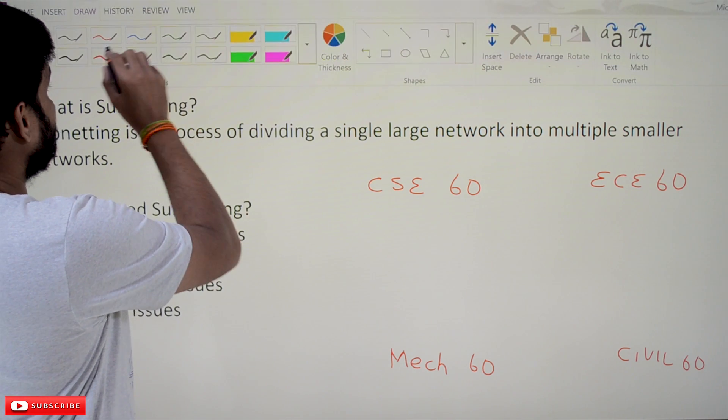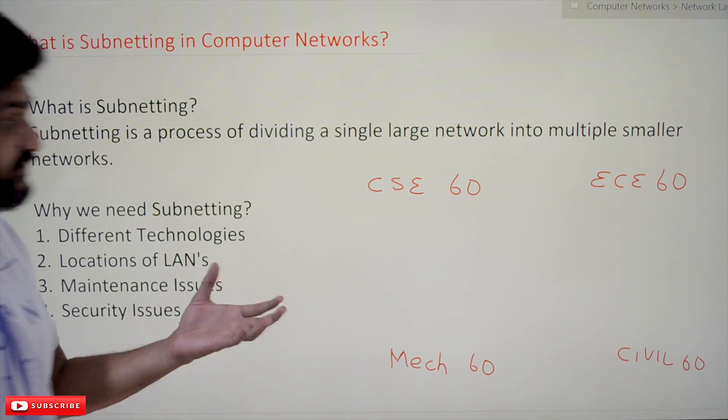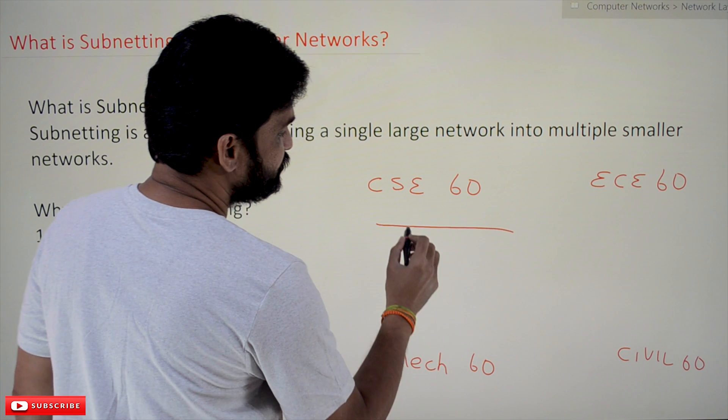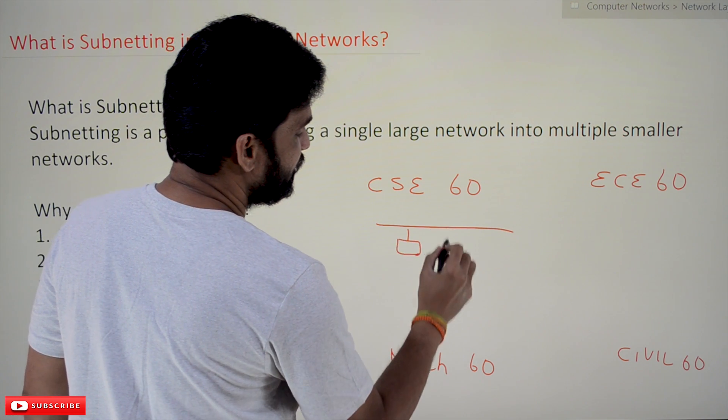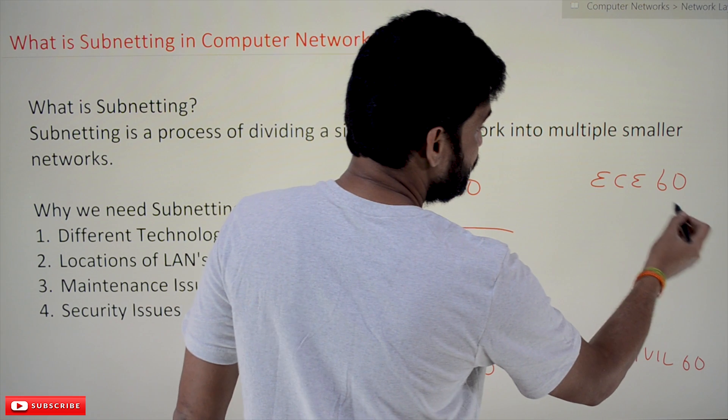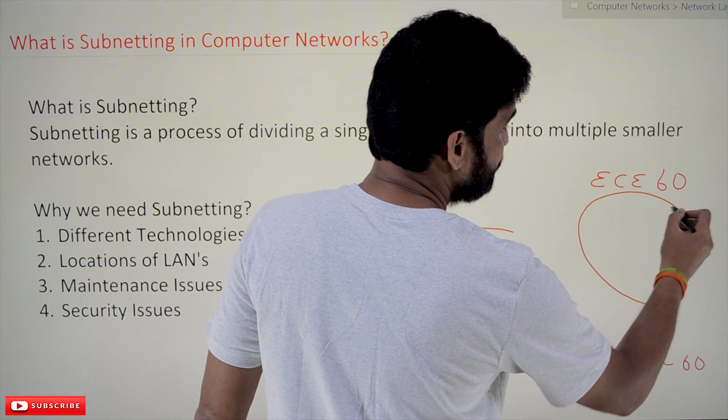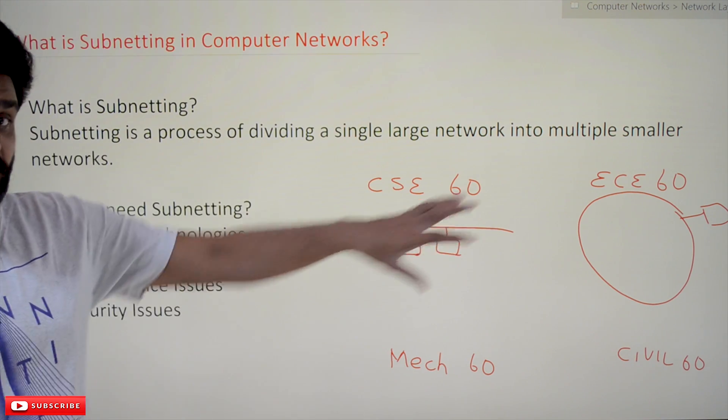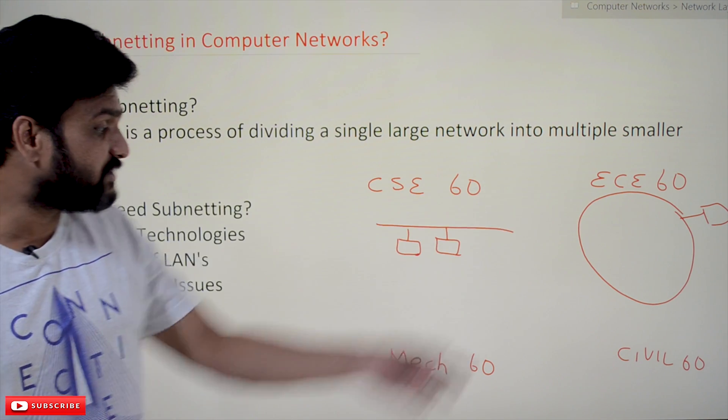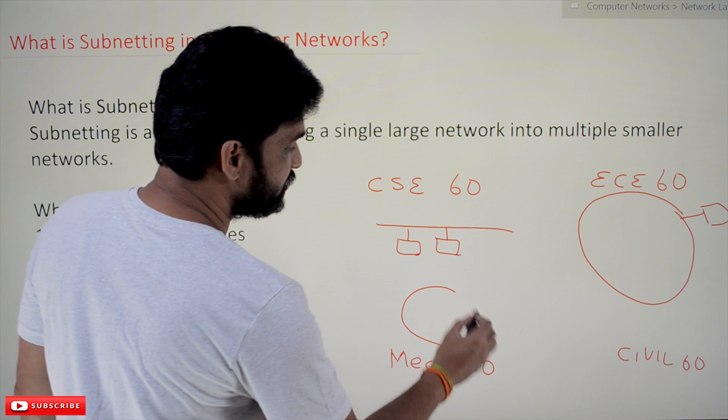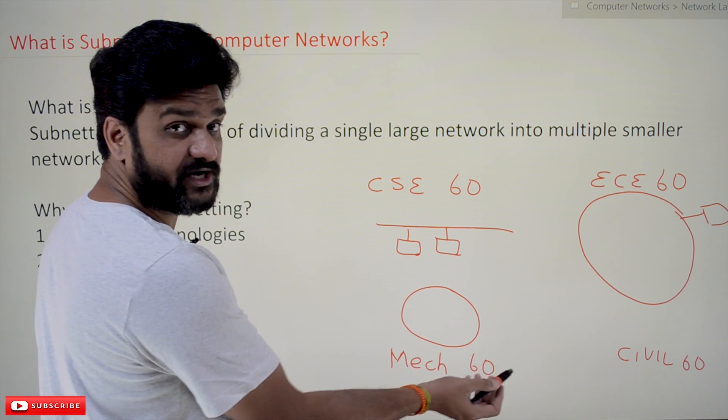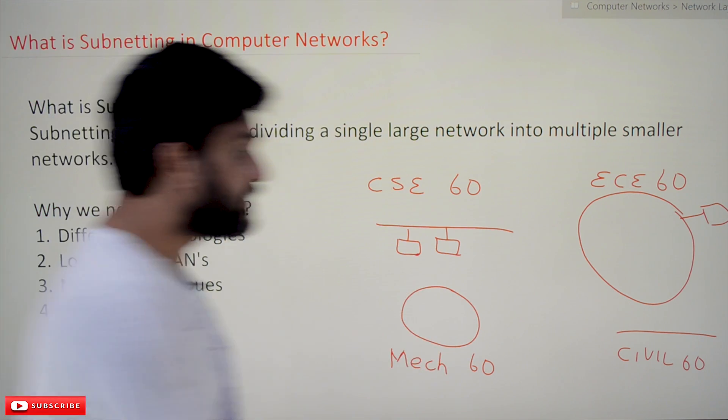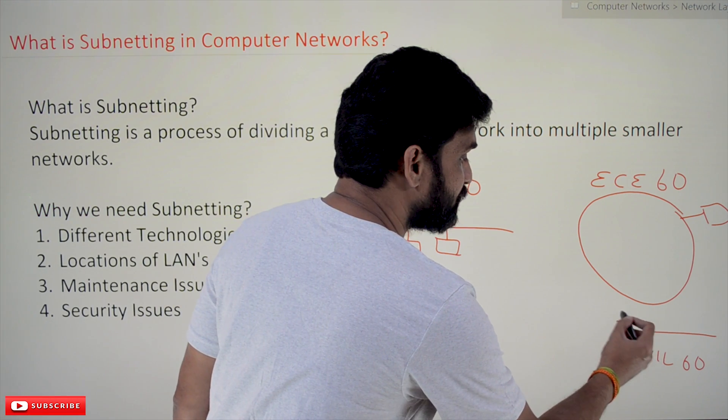Assume that CSE wants to create the lab in Ethernet. Similarly, if you take ECE lab, it wants to establish their network in ring topology, in ring technology. And similarly, if you take Mechanical, it also wants to establish their lab in ring technology. And Civil wants to establish its lab in Ethernet, using the bus topology and Ethernet technology.